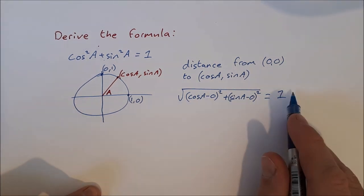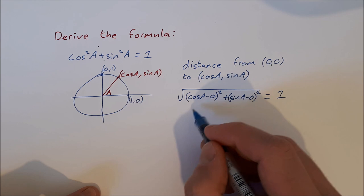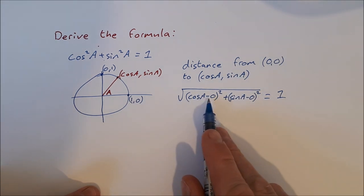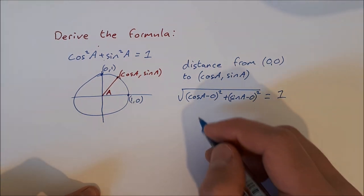So I can square both sides to get rid of the square root. And I can get rid of the zeros because anything minus 0 is just what you started with.